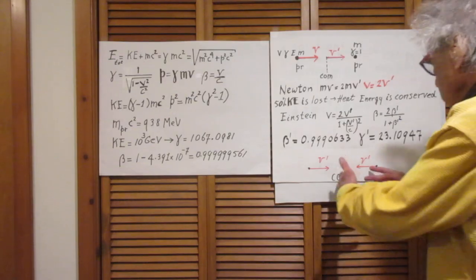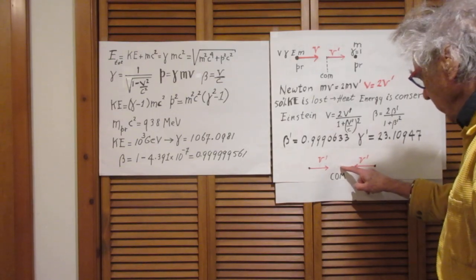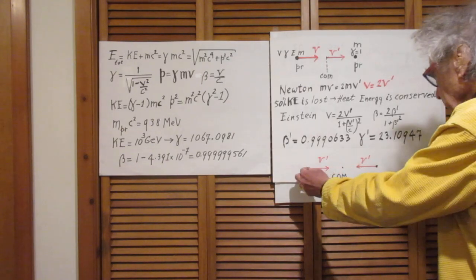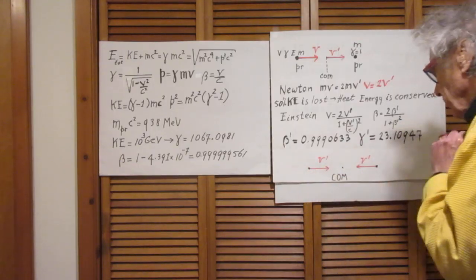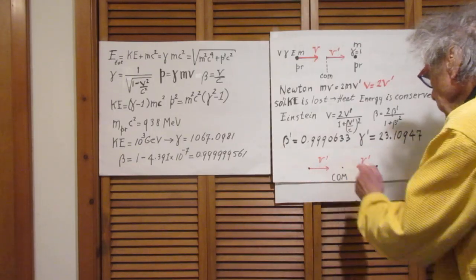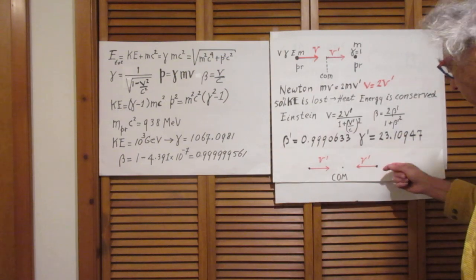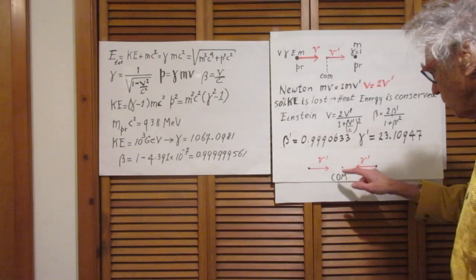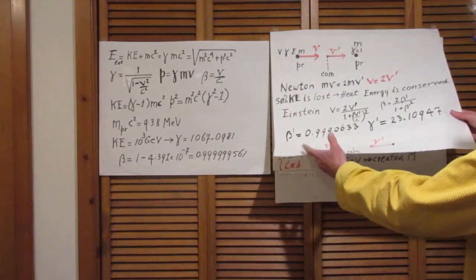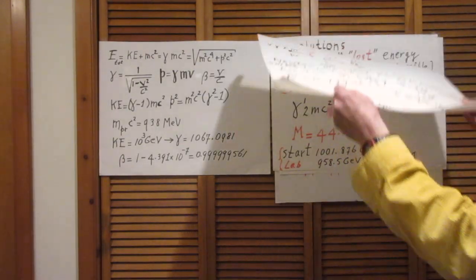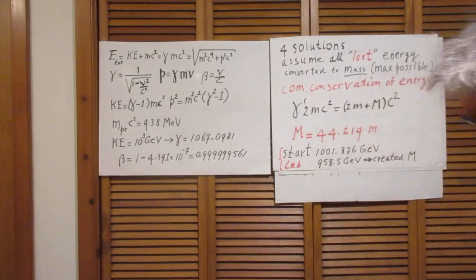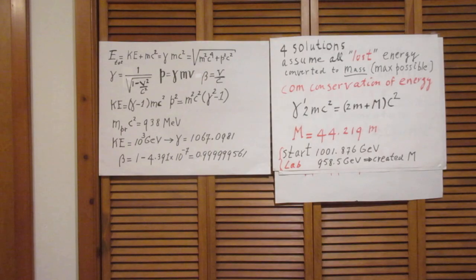So in both, if you were in the center of mass reference frame, this point would stand still in your reference frame. And you would see the 1000 GeV proton coming in this direction with speed V', and the proton that stands still in the lab frame of reference with the same V' towards the center of mass. Okay. So keep in mind that gamma prime was about 23.11.